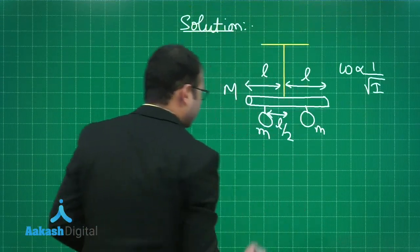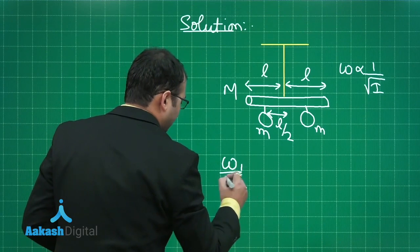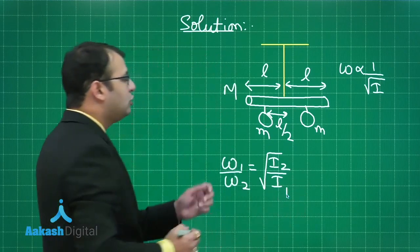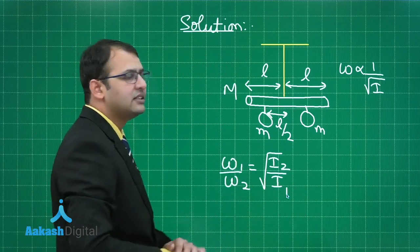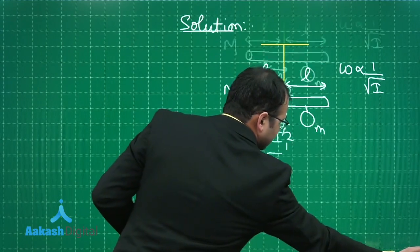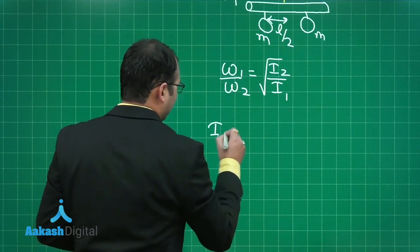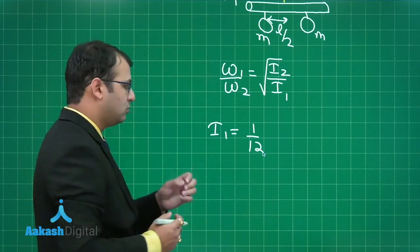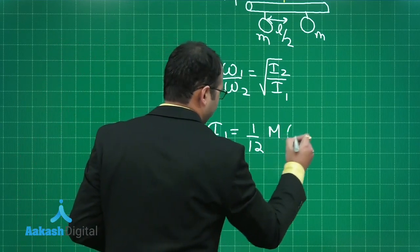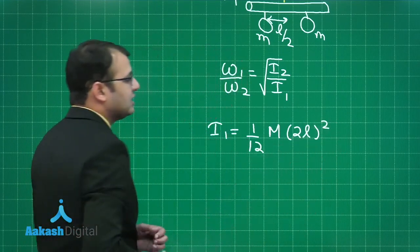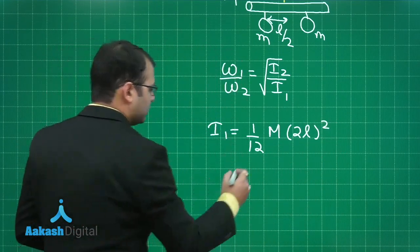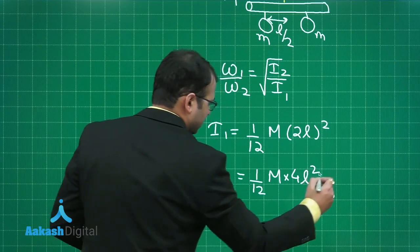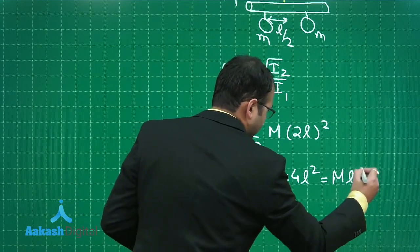We note that omega_1 upon omega_2 equals the square root of I2 by I1. We need the moment of inertia in both cases. For I1, when the axis of rotation is at the center of mass of the rod, the moment of inertia is (1/12) M (2L)² — since the full length is 2L — giving I1 = ML²/3.